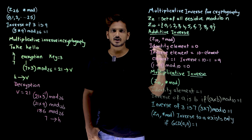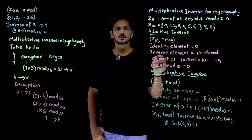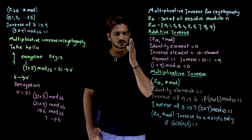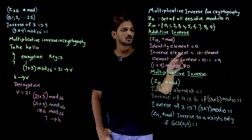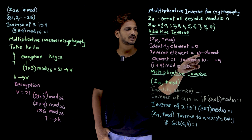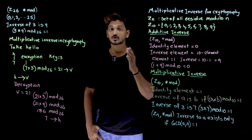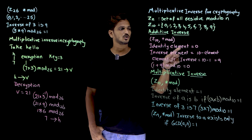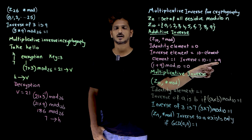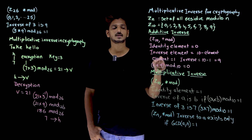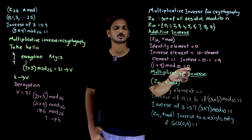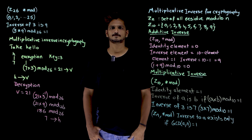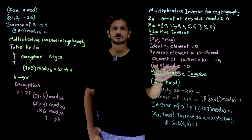From this identity element we are going to identify the inverse element. If you want to find the inverse element for 1 in addition modulo, it is n minus 1, which is 10 minus 1 equals 9. So the inverse of 1 is 9. Why? Because 1 plus 9 modulo 10 equals 0, and you are getting the identity element. That is why 1 and 9 are inverse elements.